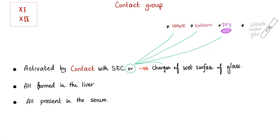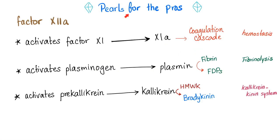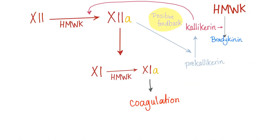We have the contact group: factors 11 and 12, activated by contact with subendothelial collagen, high molecular weight kininogen, kallikrein, platelet factor 3, or the negative charges of the wet glass surface of a test tube. All are made in the liver. All are present in the serum. Some people include high molecular weight kininogen and kallikrein as part of the contact group. Kallikrein can activate high molecular weight kininogen into bradykinin and can activate factor 12 into its active form.